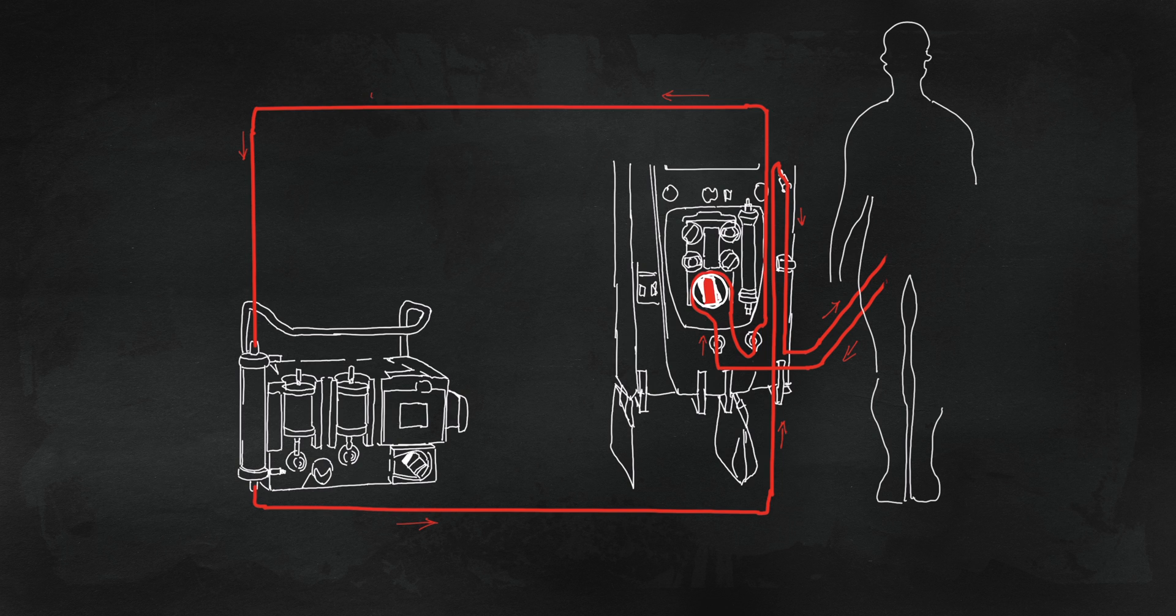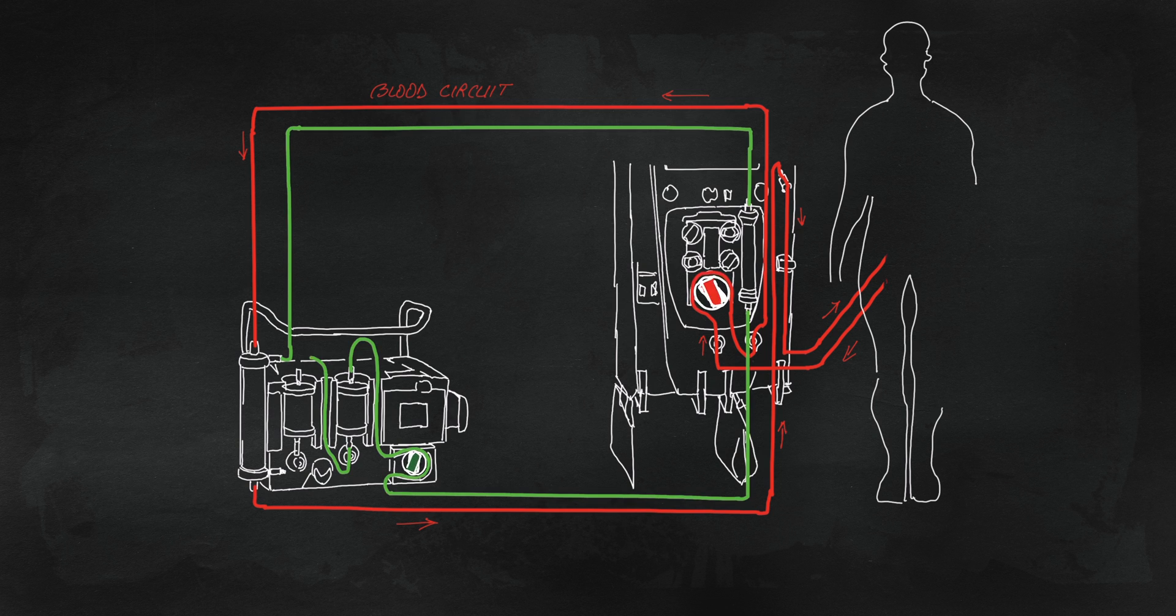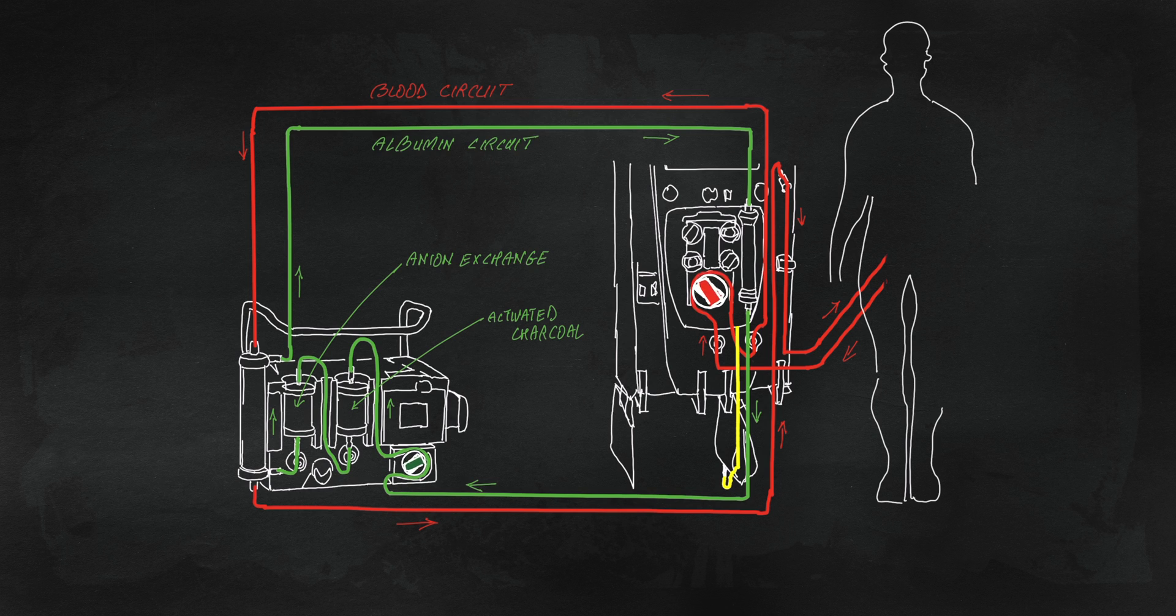The blood comes in direct contact with the albumin circuit via the MARS flux dialyser. Then, within the closed albumin circuit, solutes will travel first through the low-flux filter, then through the carbon and resin filters in their path. The last circuit is the dialysis circuit, which comes in contact with the albumin circuit in the low-flux dialyser on the PrismaFlex machine.